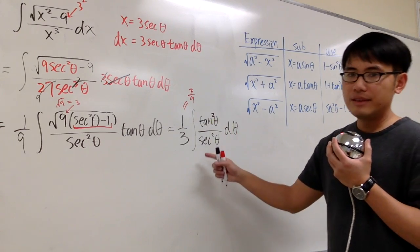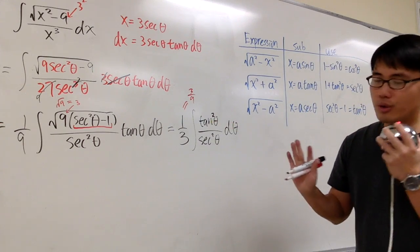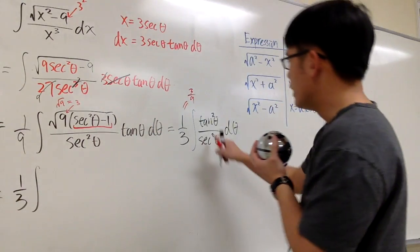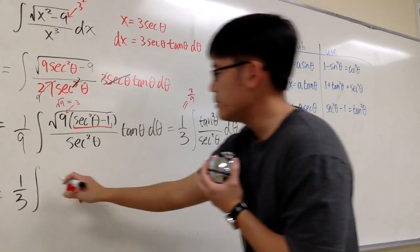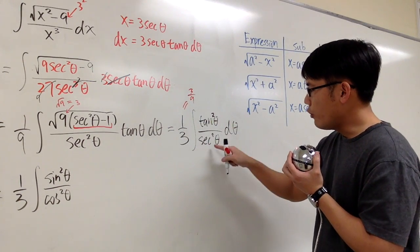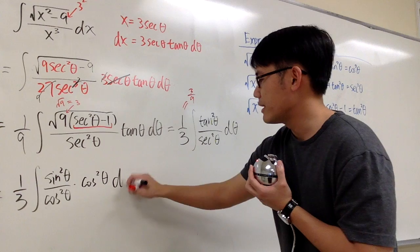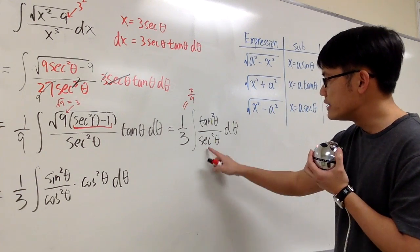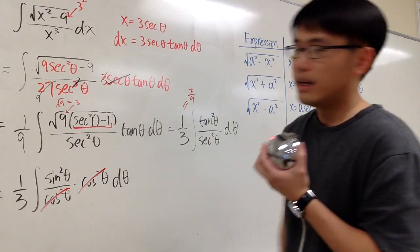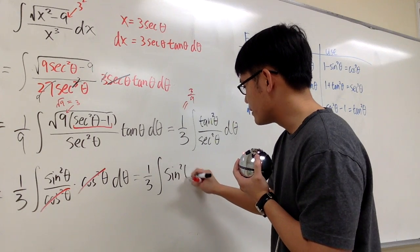Let's rewrite everything in terms of sine and cosine, because when we're dividing tangent and secant it's not a product, so it's easier to work with sine and cosine. We still have the one third out front. Tangent squared theta is sine squared theta over cosine squared theta, and one over secant squared is cosine squared theta. So the cosines cancel and we're left with one third times the integral of sine squared theta d theta.